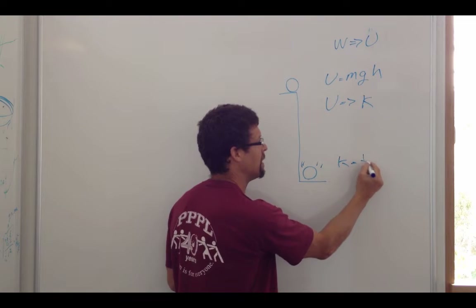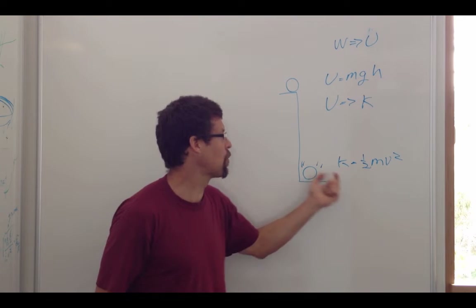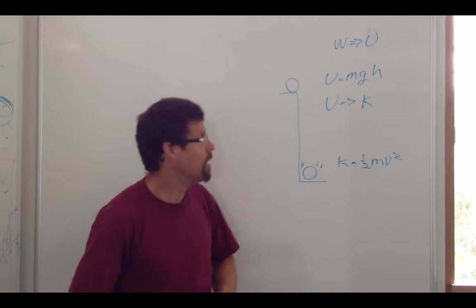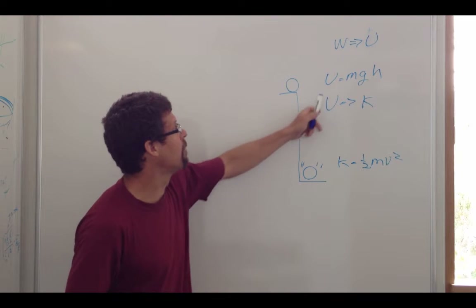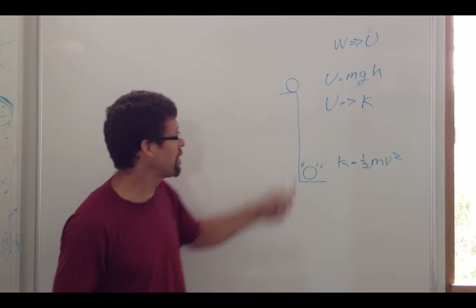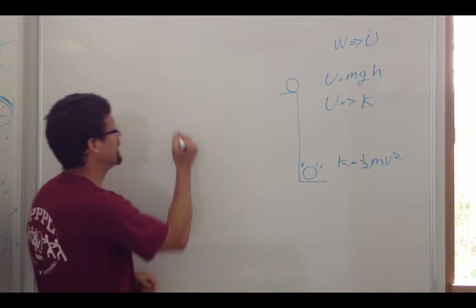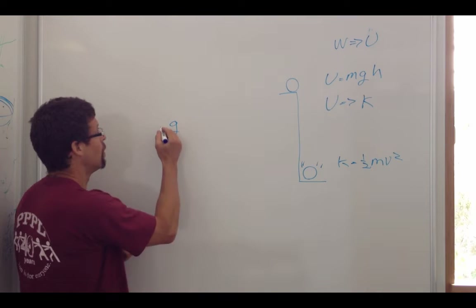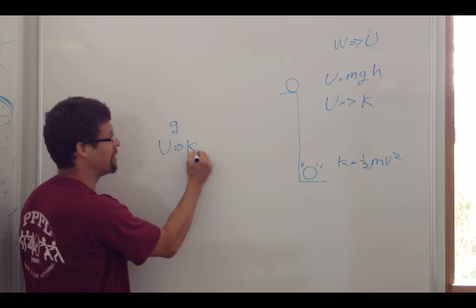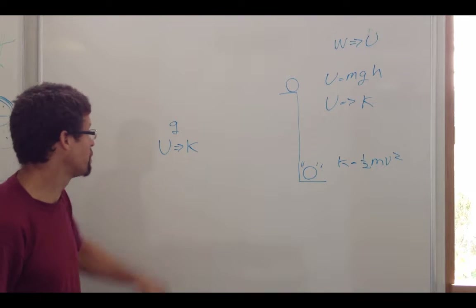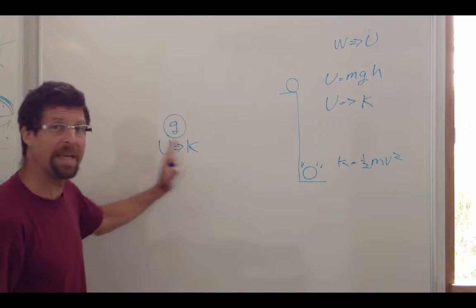That potential energy changes to kinetic energy right before the rock hits — it's moving very fast. Kinetic energy is one-half m times V squared, the mass times the square of the velocity. This is only part of the conversion. Through gravity, the potential energy changes to kinetic energy, as indicated by its velocity. The conversion force is gravity that makes that change.